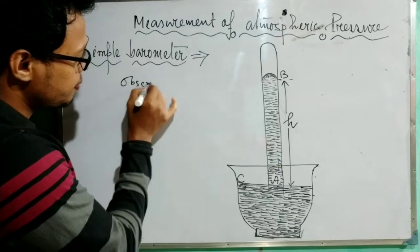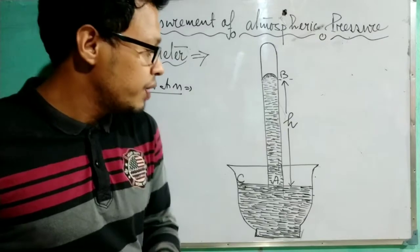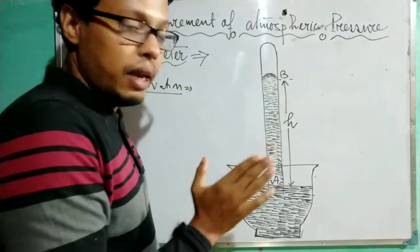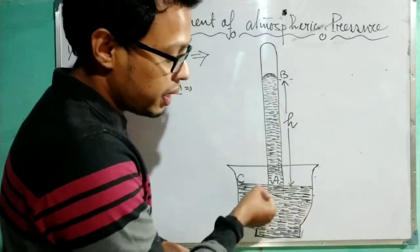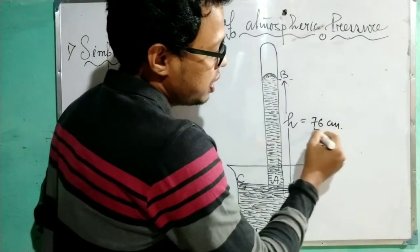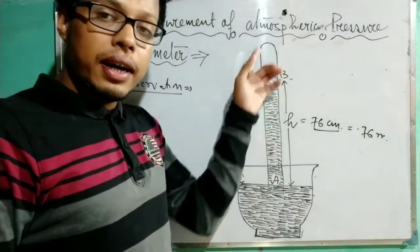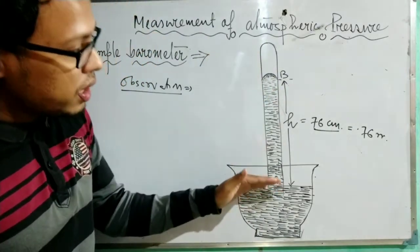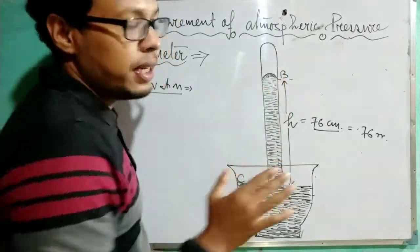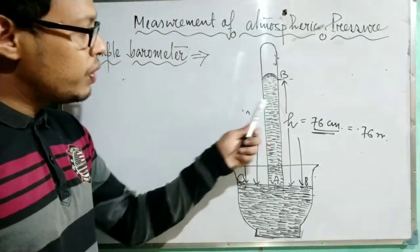Now, what is the observation? It has been observed that the height of the mercury level — that is, the height from the free surface of the mercury to the mercury column — is h = 76 centimeters, or 0.76 meters. Initially it was 100 centimeters, but when it is inverted, the mercury level falls down and settles at a height of 76 centimeters. This is called the barometric height.